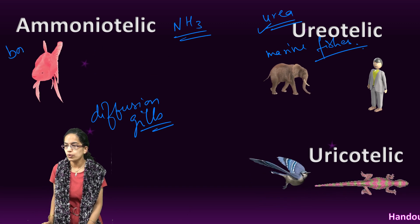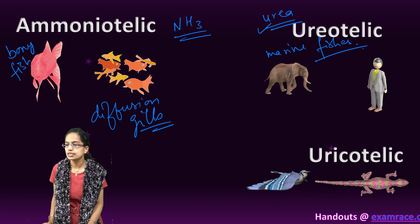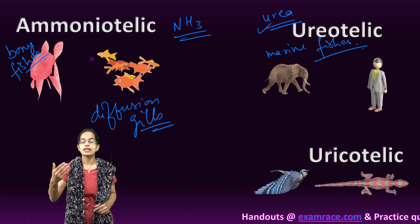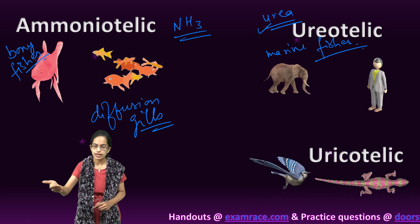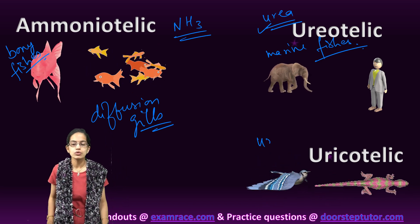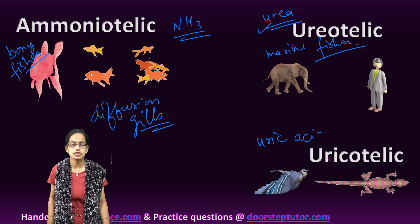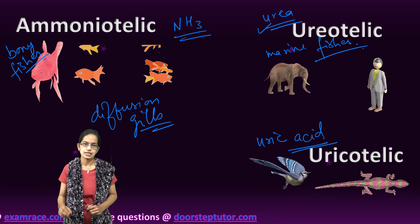An important difference: in bony fishes, excretion occurs as ammonia and therefore it is known as ammonotelic. The last form is the most concentrated form of excretion, which is uric acid.